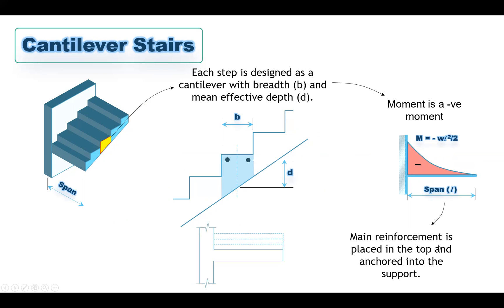In the cantilever case, the main reinforcement will be placed at the top and anchored to the support. Since the moment is negative, the tension is at the top; therefore the main reinforcement should be at the top surface of the step and anchored to the shear wall to provide good fixation for the cantilever. Usually we use two steel bars at the top of the step to resist the negative moment.